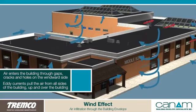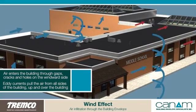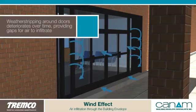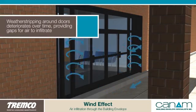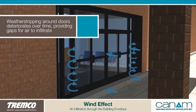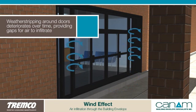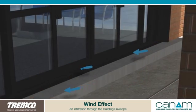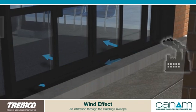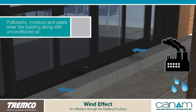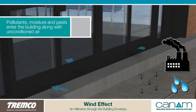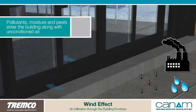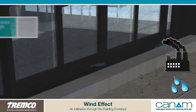Weather stripping around doors deteriorates over time, providing gaps for air to infiltrate. Pollutants, moisture, and pests are able to enter the building here along with unconditioned air, further compromising health and safety.